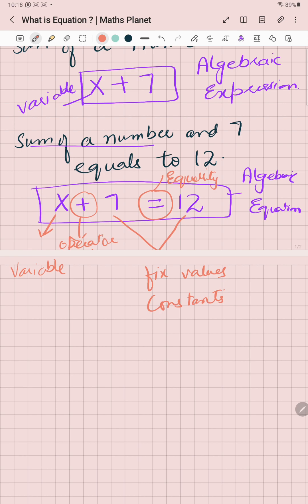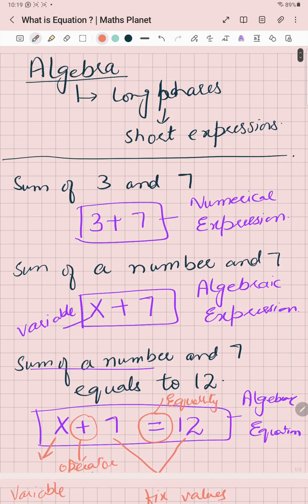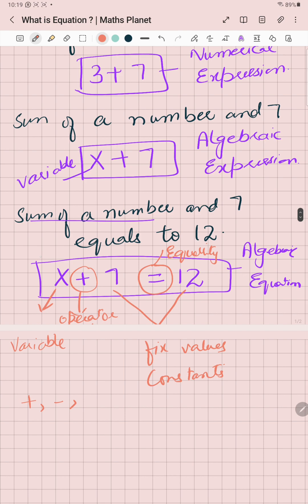What can this operator be? We can use either addition, subtraction, multiplication, or division. What is an equation? An equation is an algebraic expression which involves the sign of equality. What is an algebraic expression? Any expression which involves a variable and a constant with an operator is known as an algebraic expression.